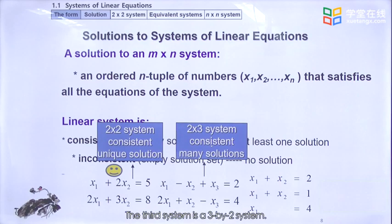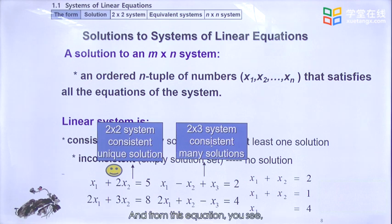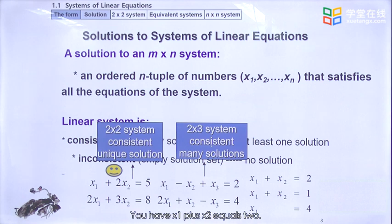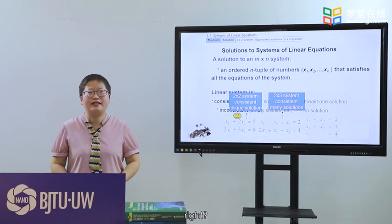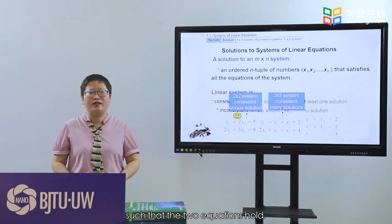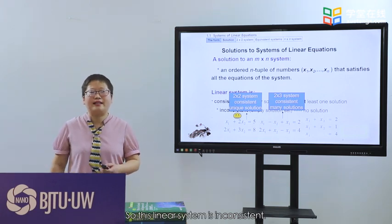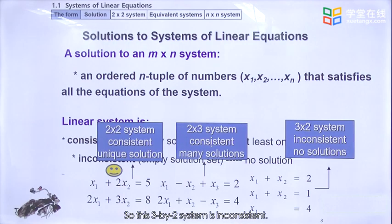The third system is a 3×2 system with three equations and two unknowns. The first equation gives x1 + x2 = 2, and the second equation gives x1 + x2 = 1. You cannot find numbers satisfying both equations simultaneously, so this linear system is inconsistent — there is no solution at all.